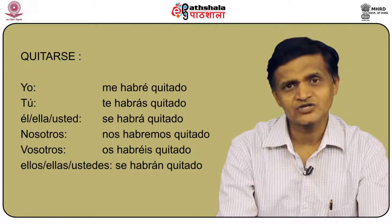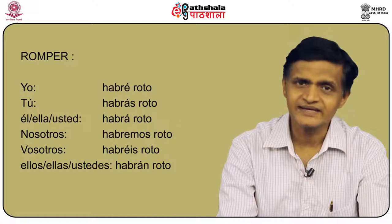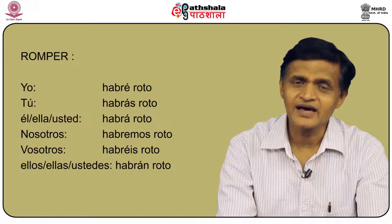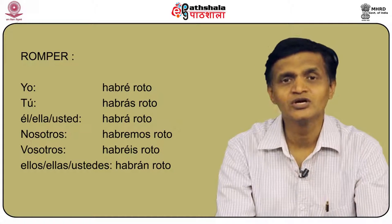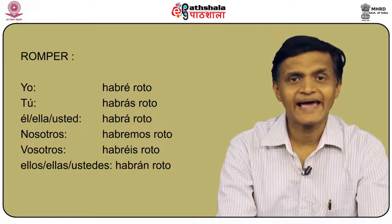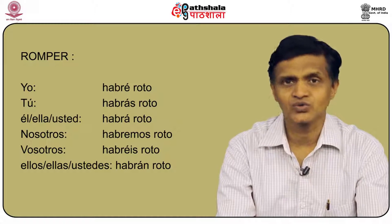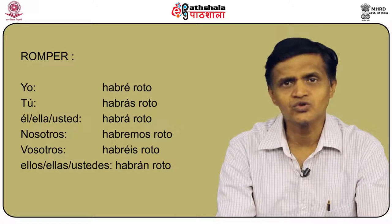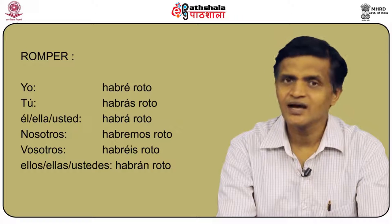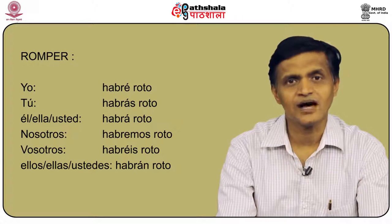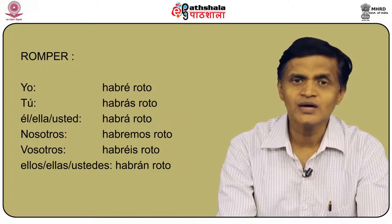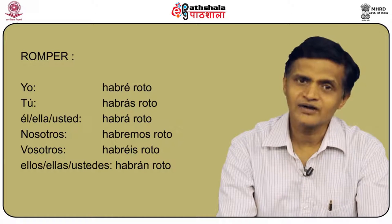The next verb is romper, an -er ending verb. Romper is irregular: its past participle is roto. So: yo habré roto, tú habrás roto, él/ella/usted habrá roto, nosotros habremos roto, vosotros habréis roto, and ellos/ellas/ustedes habrán roto.